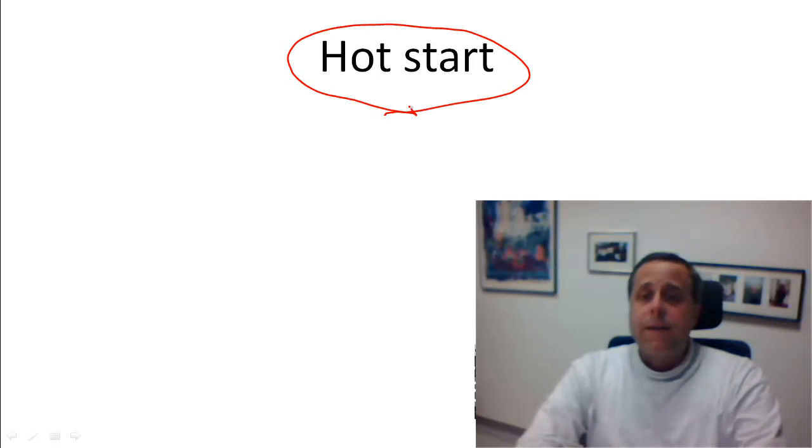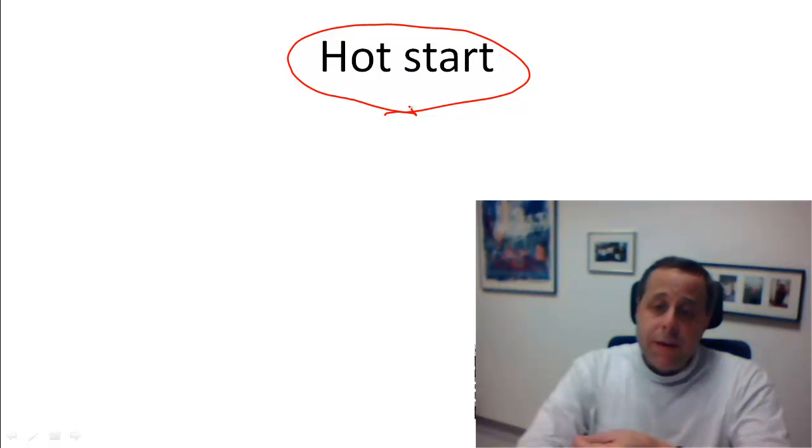Hot start literally means that you first heat up your PCR machine to 95 degrees, then you put in the tube that contains all the PCR components except the Taq polymerase. So you haven't added the Taq polymerase yet, but everything else is in the tube.